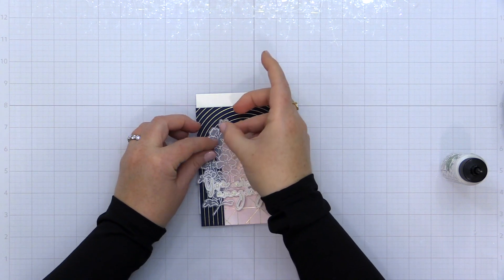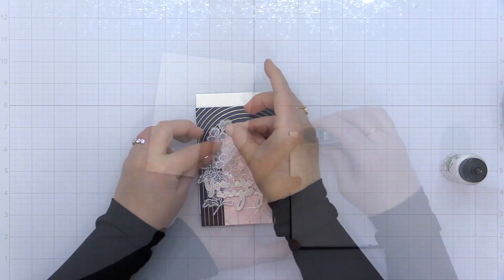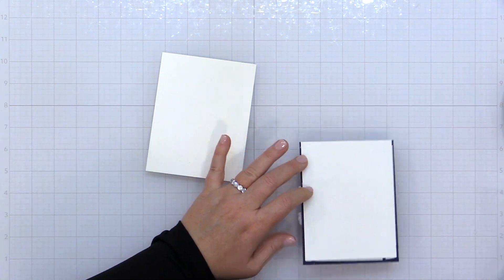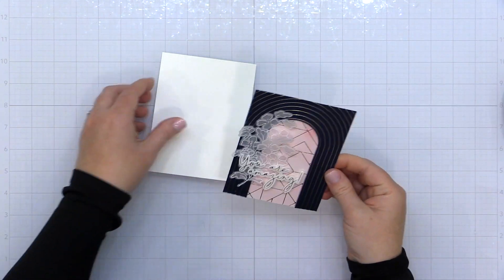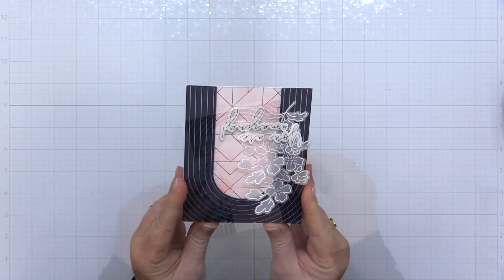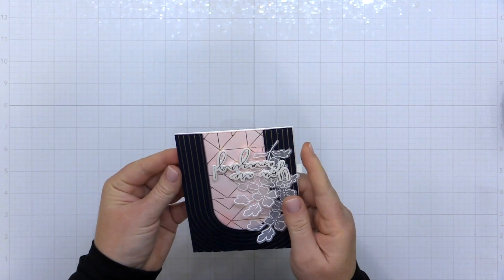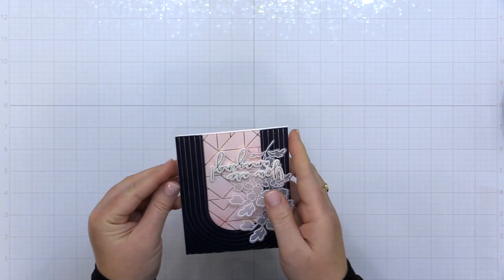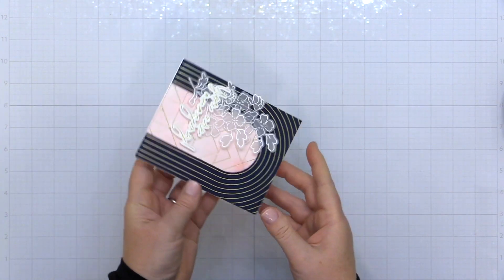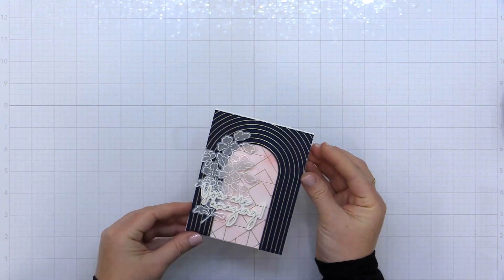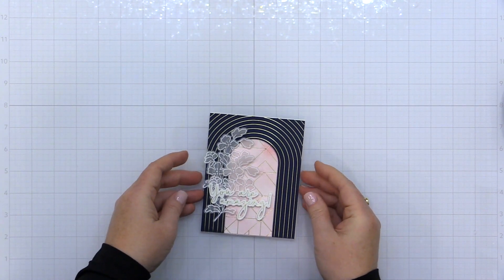Now I'm going to take this entire card front and I am going to adhere it to a top-folding white A2 card base. I created this from some Neenah Solar White heavyweight cardstock—it's 110 pounds—it is cut to four and a quarter by 11 inches and then scored it five and a half inches to create this top-folding card.